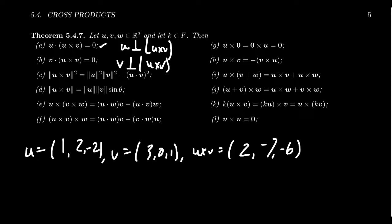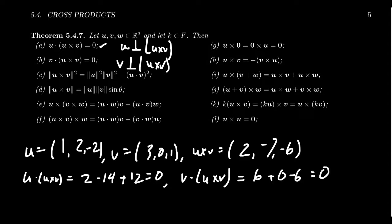If we compute those dot products U dot U cross V, we end up with 2 minus 14 plus 12. That's zero. Likewise, if we take V dot U cross V, that would end up to be 6 plus 0 minus 6, which is likewise 0.